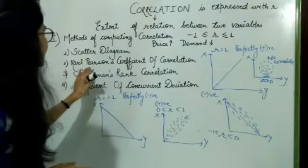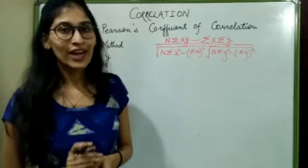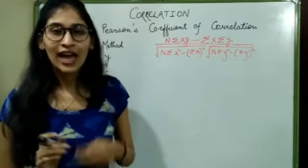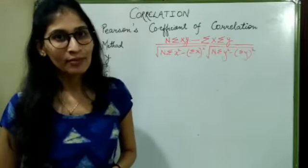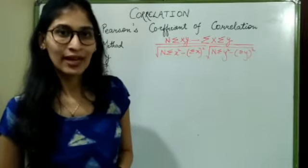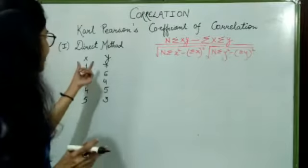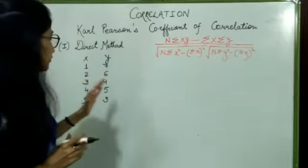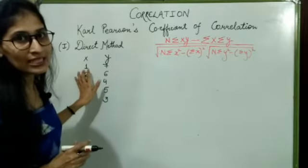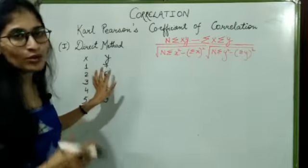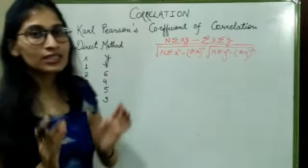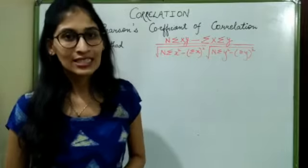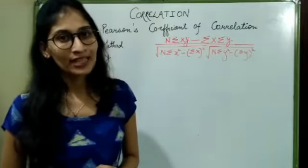Our second method is Carl Pearson's coefficient. To find the coefficient of correlation with Carl Pearson's method, we have two techniques. First is the direct method, and second is the assumed mean method. When the quantities of x and y are small, we use direct method. But if the numbers are large — like 1000 or 7800 — we will use assumed mean method. So first let's discuss how the direct method works.